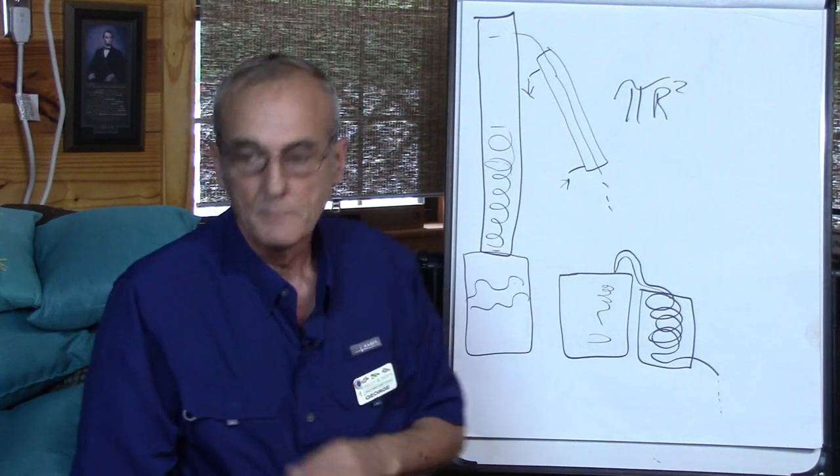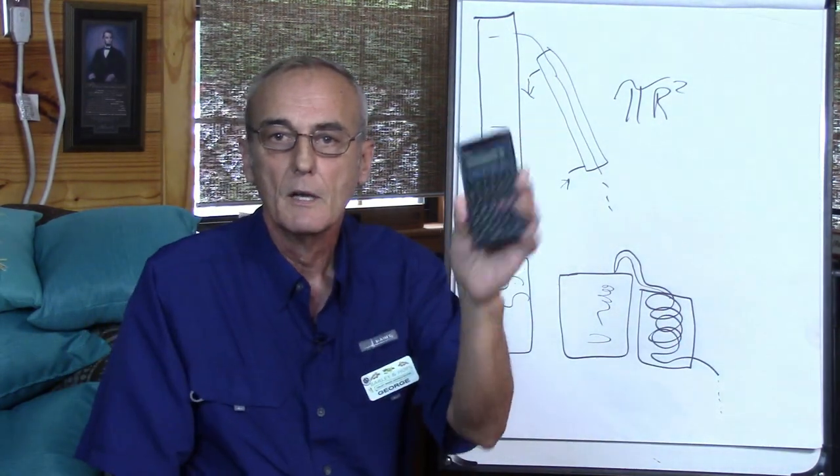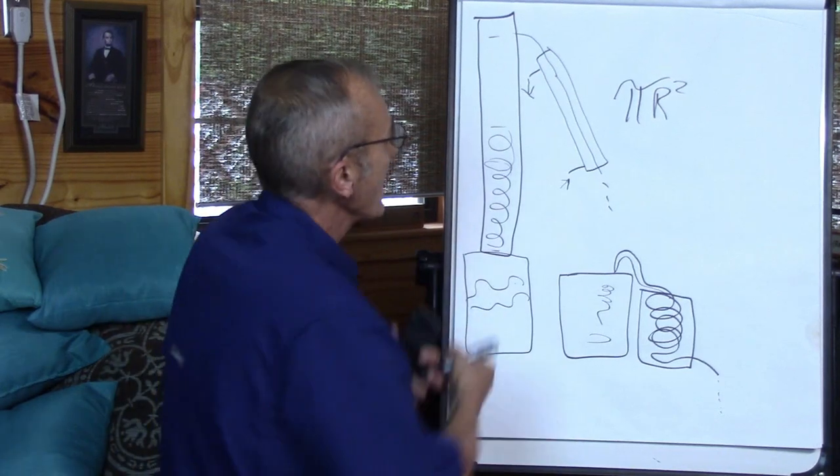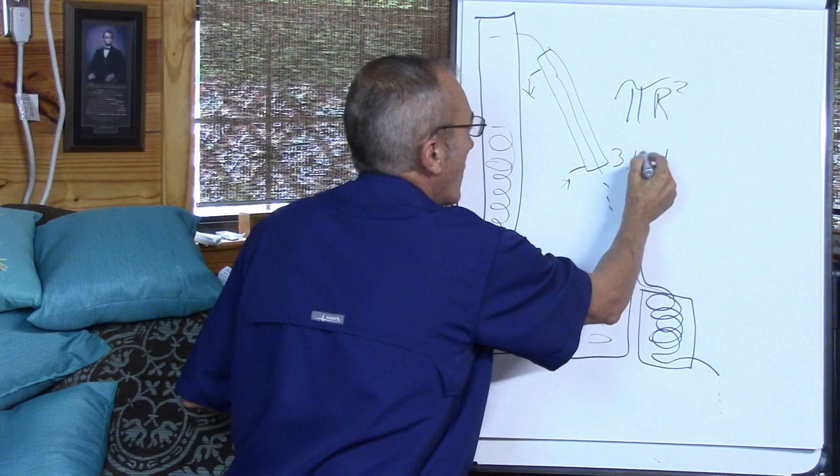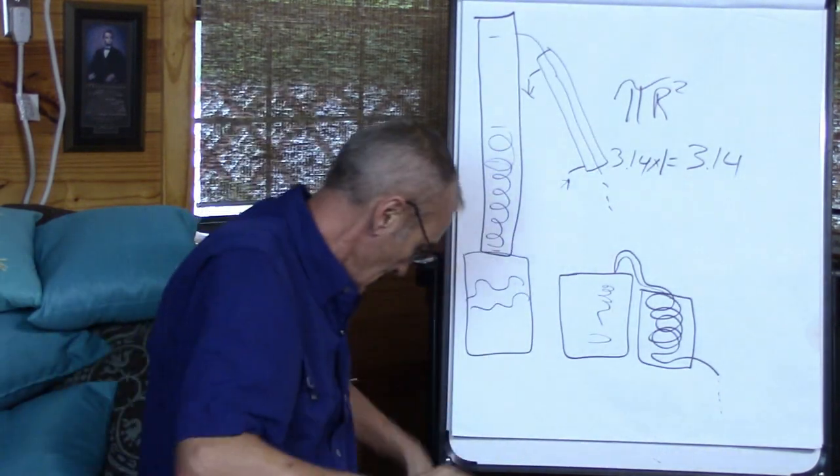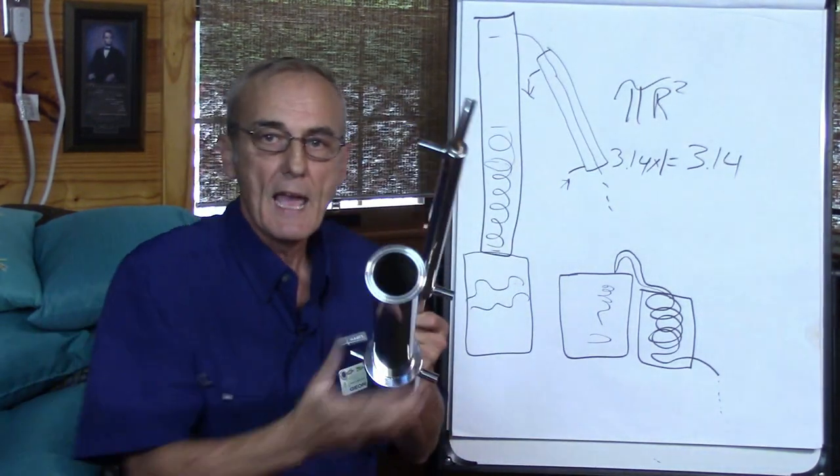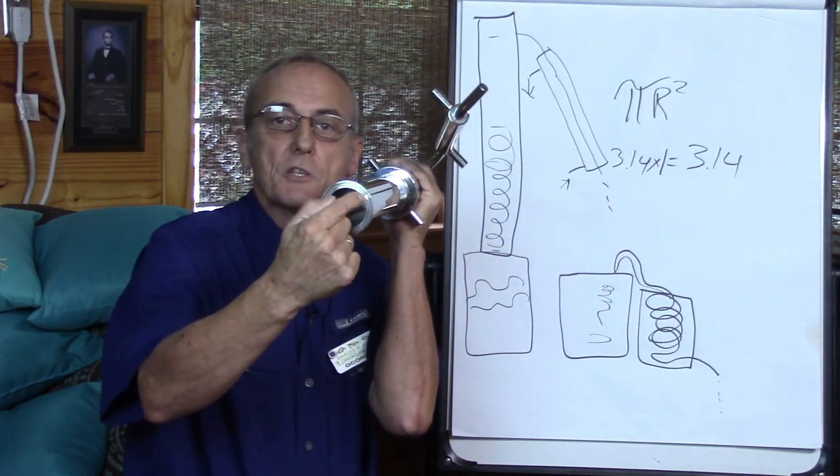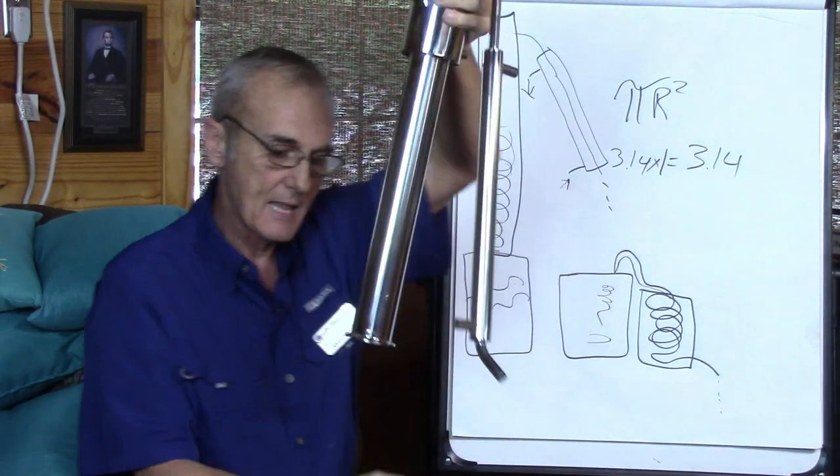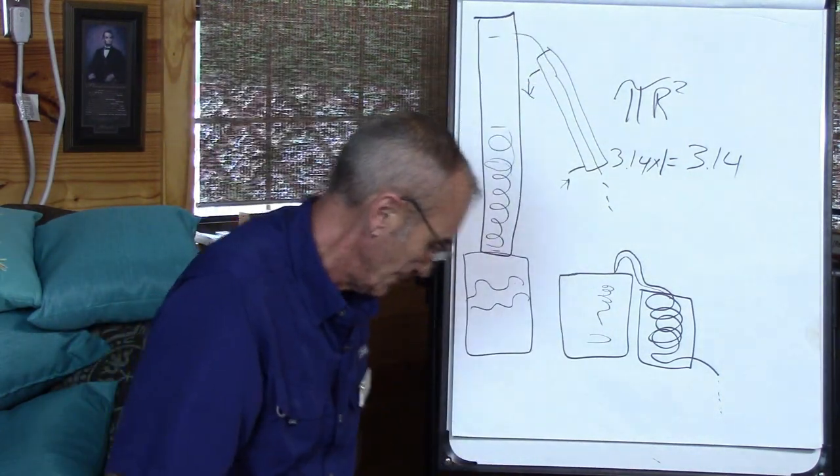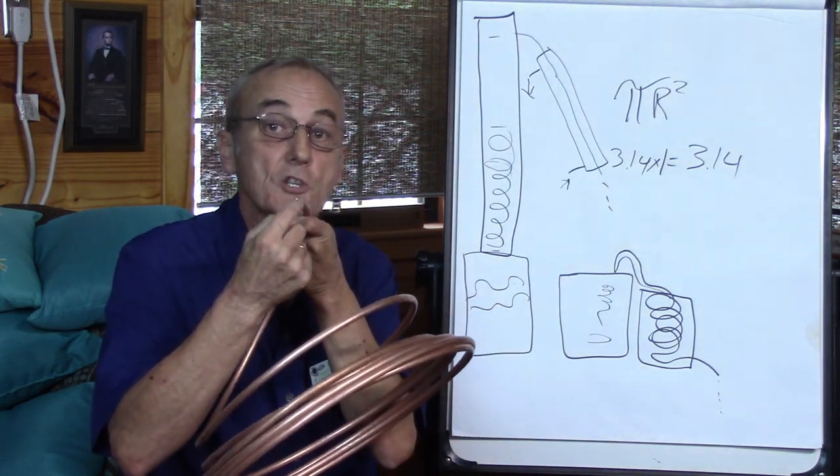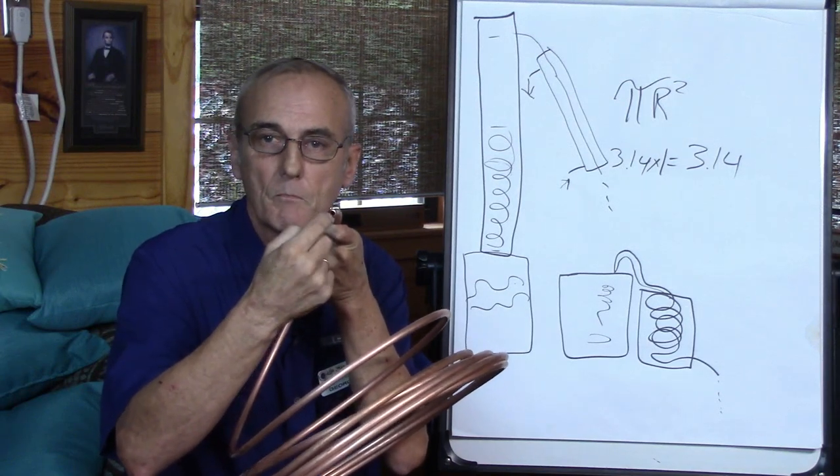So in this two inch column that I have here, I've got 3.14 inches circumference inside here, which means I've got a lot more surface area coming out of that kettle than I would versus a quarter inch, which is going to be extremely small surface area or circumference. You follow me so far? That's the major difference in your efficiency.